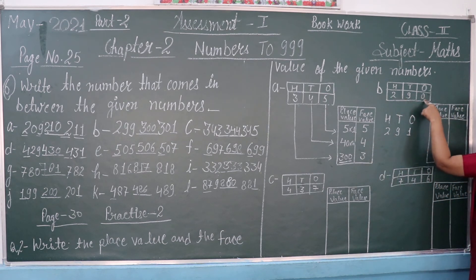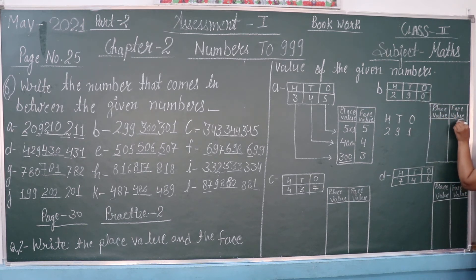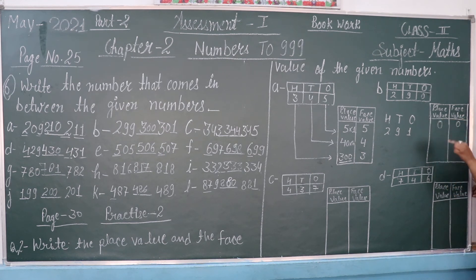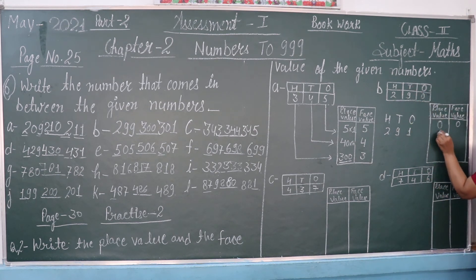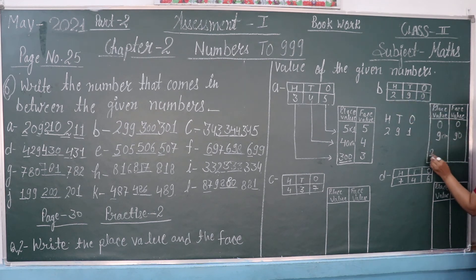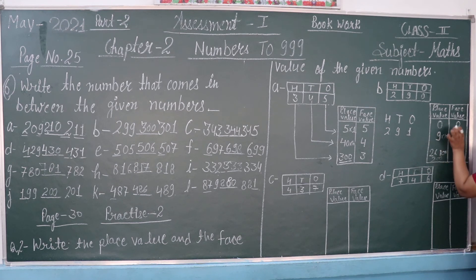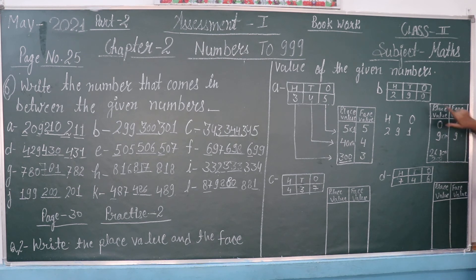Next question: 290. The digit 0 — its face value is 0 and place value is also 0, because any number multiplied by 0 is 0. The digit 9 — face value is 9, place value is 9 × 10 = 90. The digit 2 — face value is 2, place value is 2 × 100 = 200.